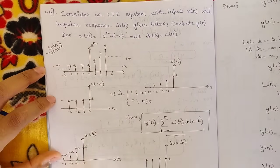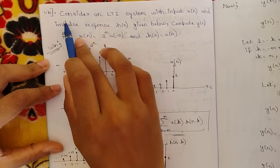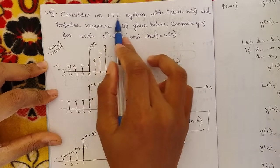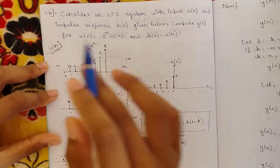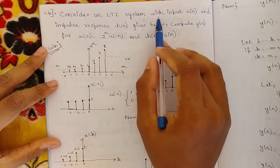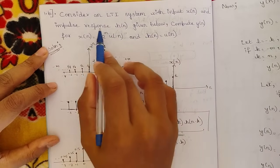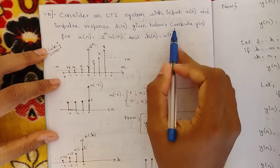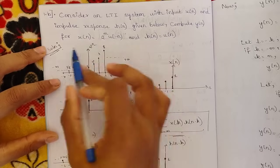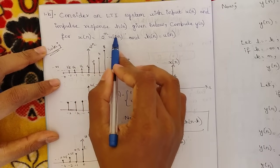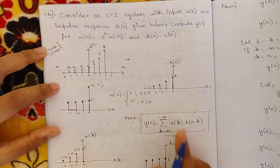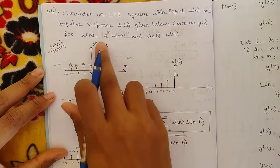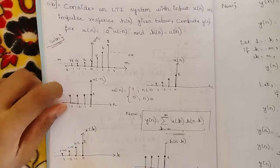Now question 1b — a very important question worth around 10 marks. Consider an LTI (Linear Time Invariant) system with input x(n) and impulse response h(n). We need to compute y(n) where x(n) = 2^n · u(−n) and h(n) = u(n). These are the given terms, and we'll draw plots to understand these two sequences.